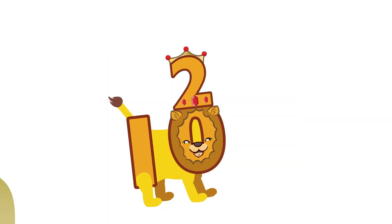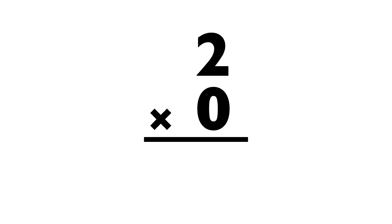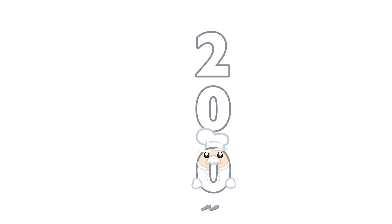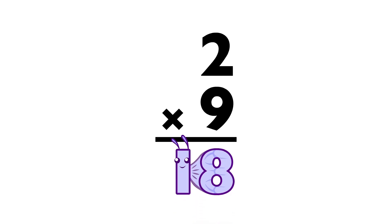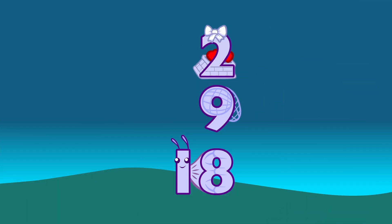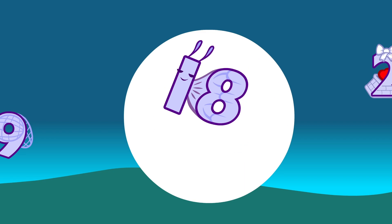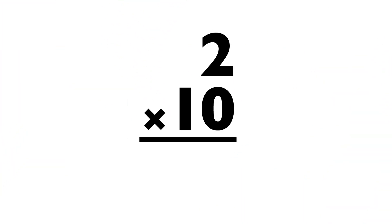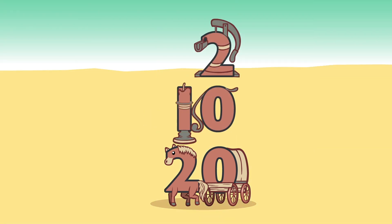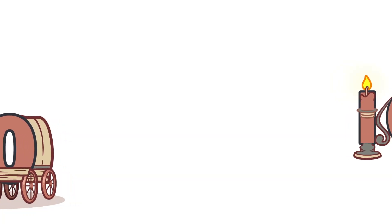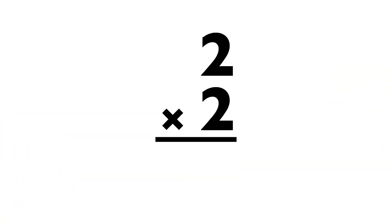Roar! Two times zero equals... Zero. Two times nine equals... Eighteen. Two times ten equals... Twenty. Two times two equals... Four.